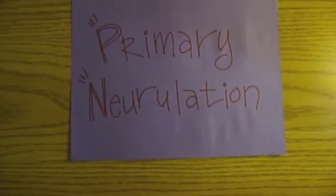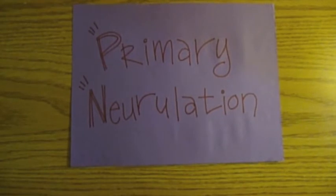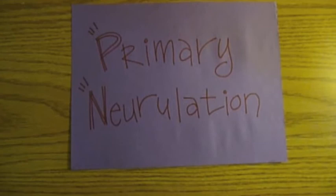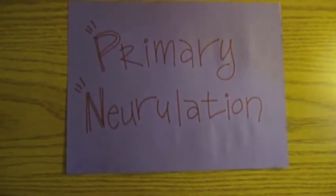Today we're going to learn about primary neurulation. In primary neurulation, neural plate cells proliferate, invaginate, and separate from the surface ectoderm to form the neural tube. This occurs in the anterior embryo and forms the brain.